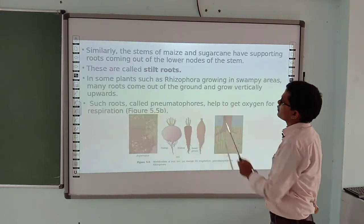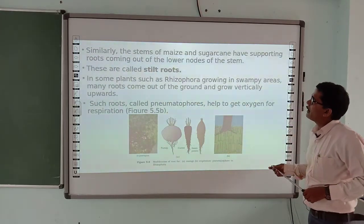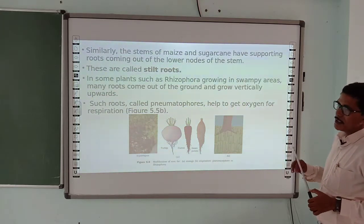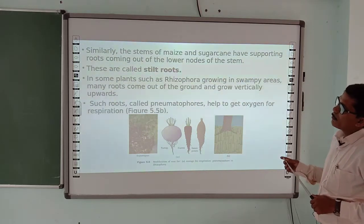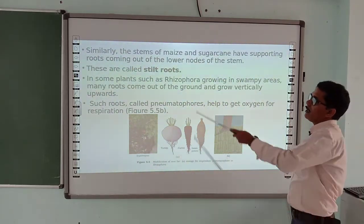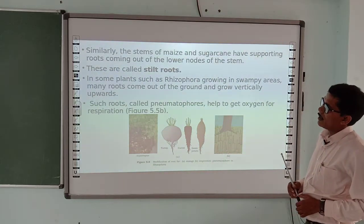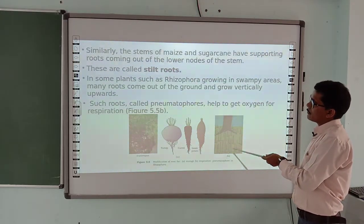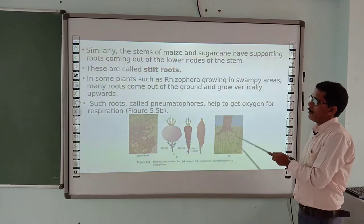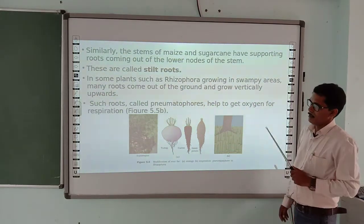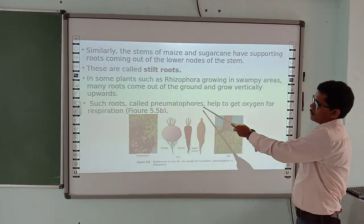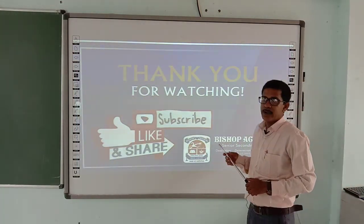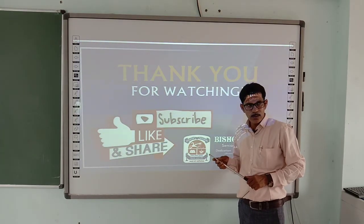We can see prop roots in the diagram. Similarly, sugarcane also has prop roots — still roots — for support. In some plants such as those growing in swampy areas, like mangroves, many roots come out of the ground and grow vertically upward; such roots are called pneumatophores. These are respiratory roots — a modification of roots. Students, if you have any doubts, you can contact me on Google Classroom. Thanks.